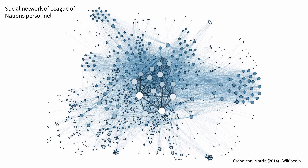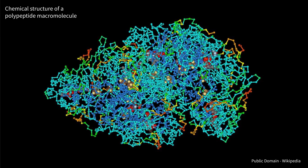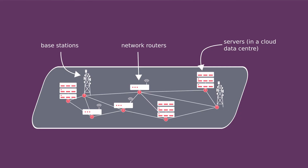Can you tell us a bit more about graph neural networks? A graph neural network is a type of deep learning framework that can handle data represented in the form of graphs, like in social networks, molecules, or the telecommunication network in our case. A graph of the network not only contains all those nodes such as base stations, network routers and servers in the cloud data center, but also the connections between them.